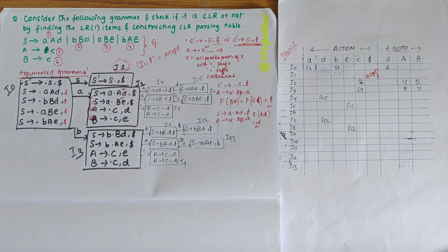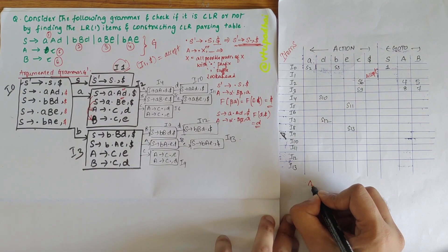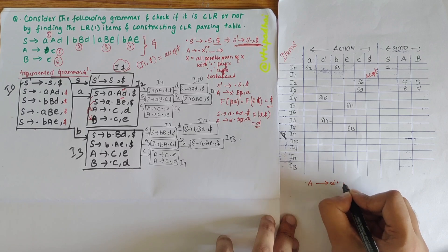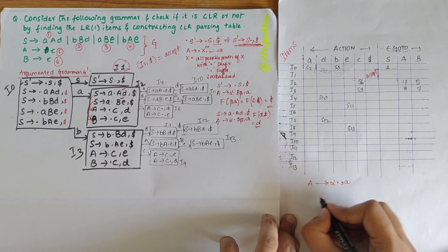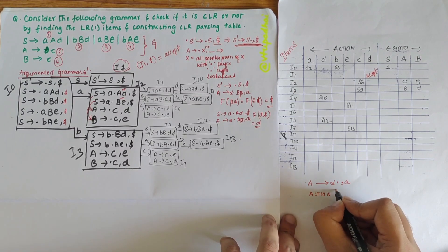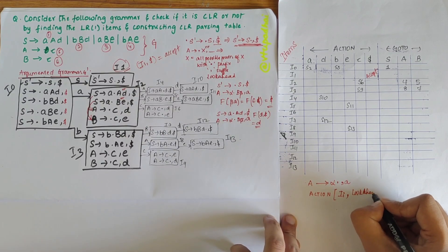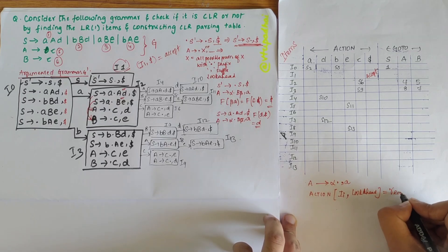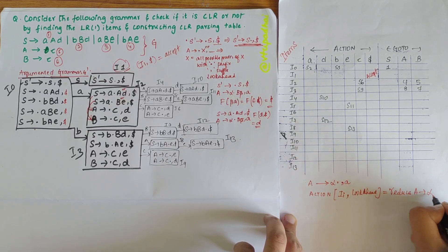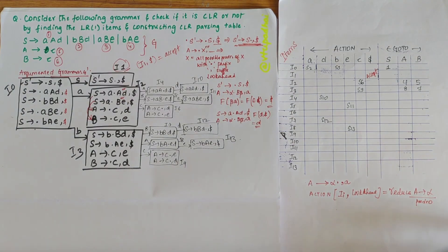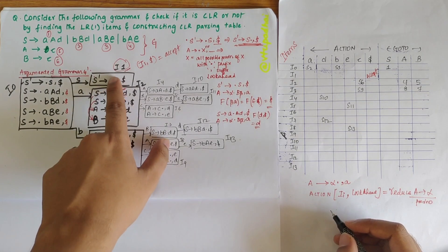Now I need to look into the reduce part. For any production of the form A → α•, a (dot at the end), you can write in the action part: for that state and lookahead a, reduce by A → α, using the corresponding production number. Note that A should not be the start symbol.